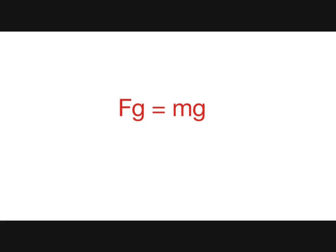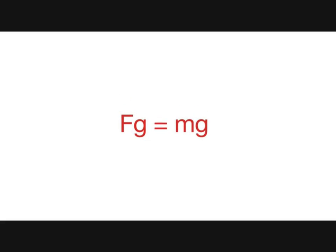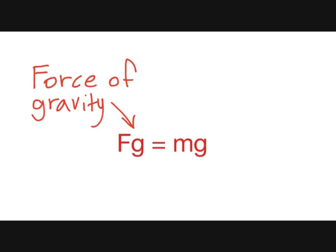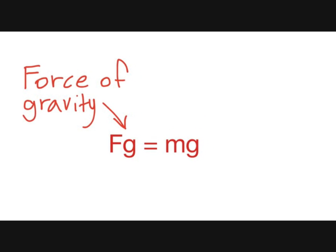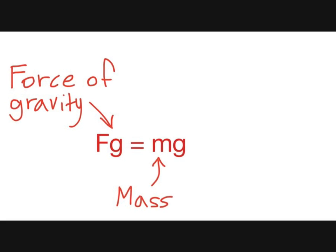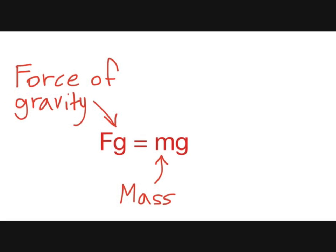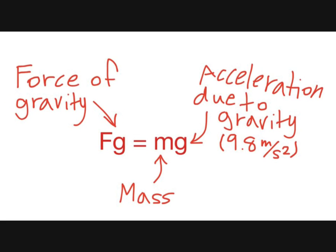And so weight and mass are not the same at all. Let's say you want to find Amina's actual weight, which is the amount of force that she is actually being pulled down by through gravity. You would use the equation Fg equals mg, where Fg represents force of gravity, M represents mass,